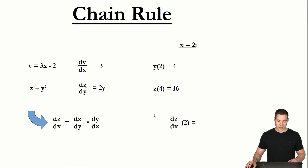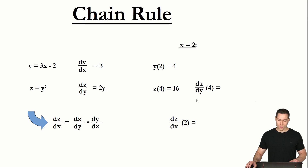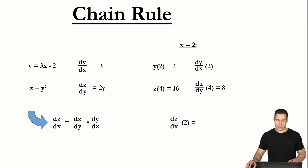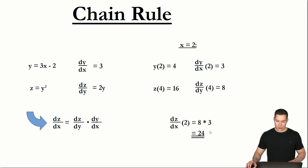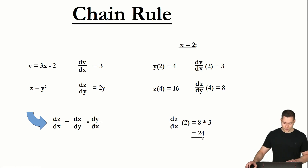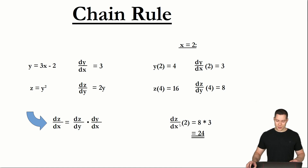We first need the derivative of z with respect to y, evaluated when y equals 4, because if x is 2 then y is going to be 4. So we multiply 2 times y, which is 2 times 4 equaling 8. Then we determine the partial derivative of y with respect to x evaluated at x equals 2. The derivative of y is always 3. Multiplying those two numbers gives us a derivative of 24.